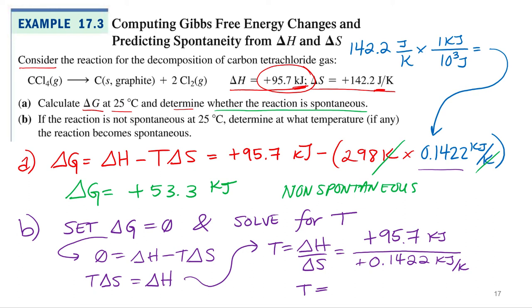And so we can take 95.7 divided by 0.1422. What are my units? Kelvin. Kilojoules cancel out, leaving me with Kelvin. So this reaction becomes spontaneous.